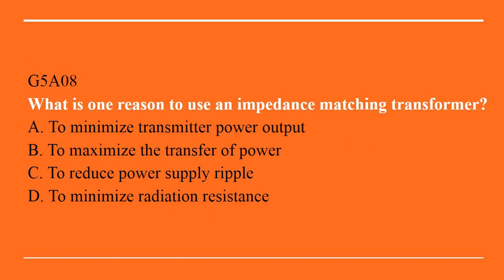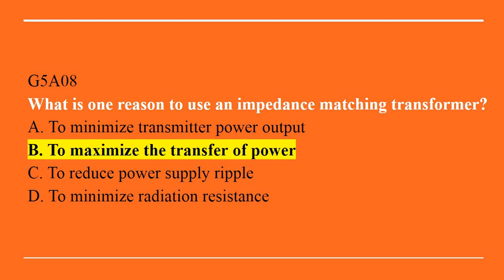G5A08: what is one reason to use an impedance matching transformer? A. To minimize transmitter power output. B. To maximize transfer of power. C. To reduce power supply ripple. Or D. To minimize radiation resistance. Correct answer is B: to maximize the transfer of power.